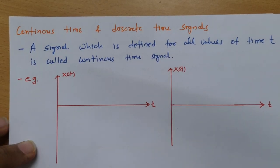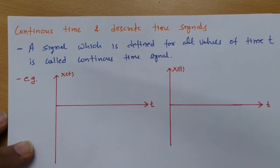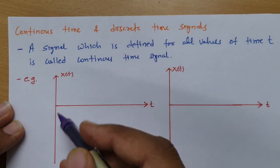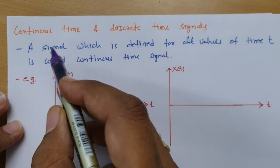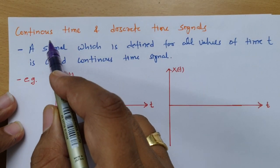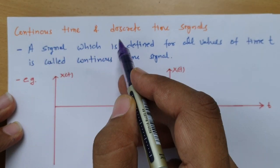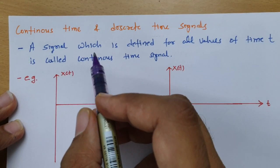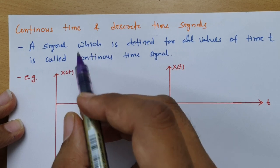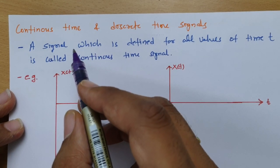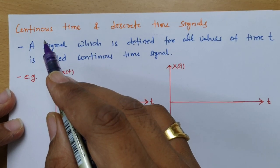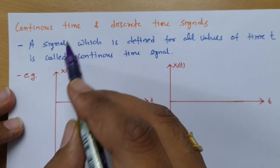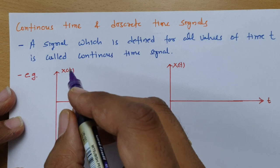Welcome to the Signal and System lecture series. In this session I will be discussing continuous time and discrete time signals. Let us begin with the first point: what is a continuous time signal?